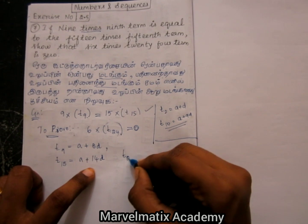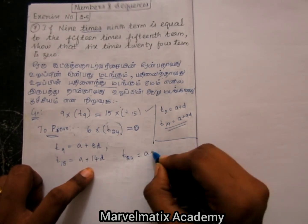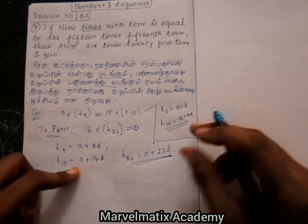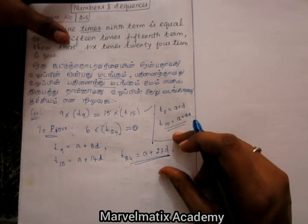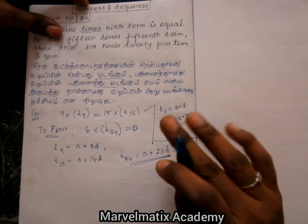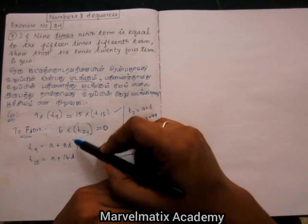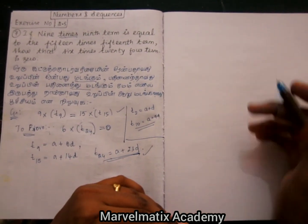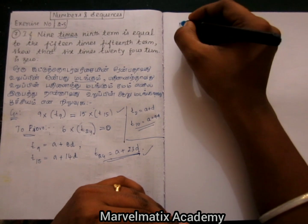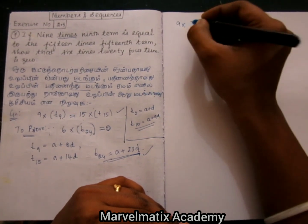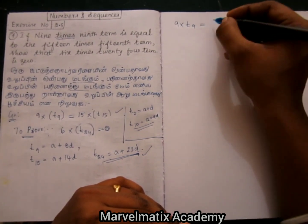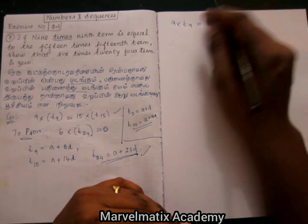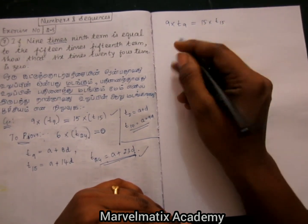T24 is a plus d. So this term is equal to 0. Prove this — T9, T15, T24 is a plus d. From the given: 9 into T9 equal to 15 into T15. This is equal — so this is the terms applied.